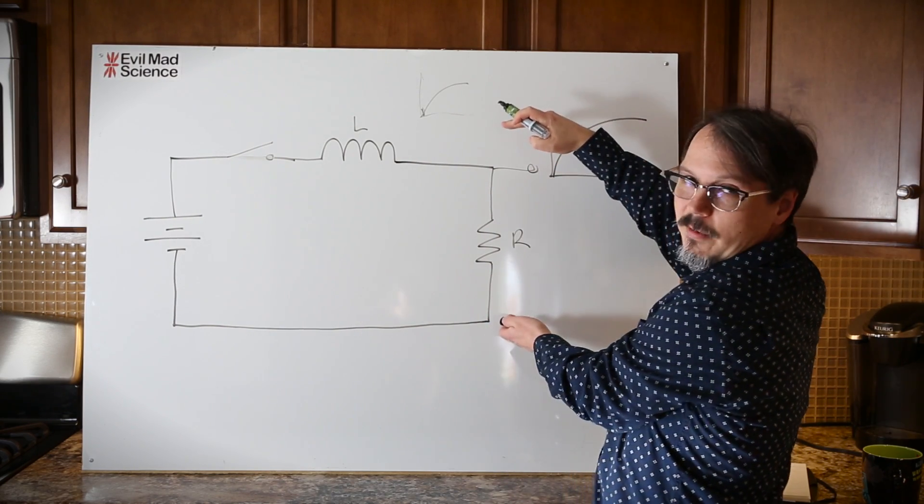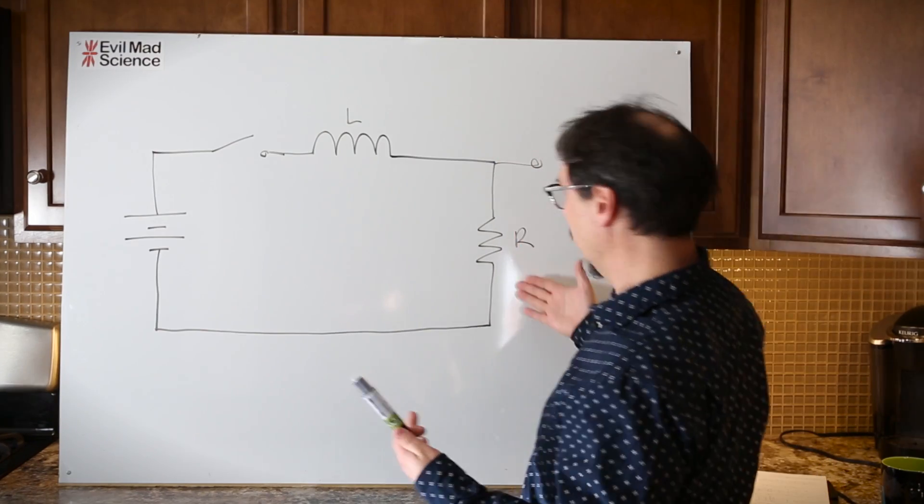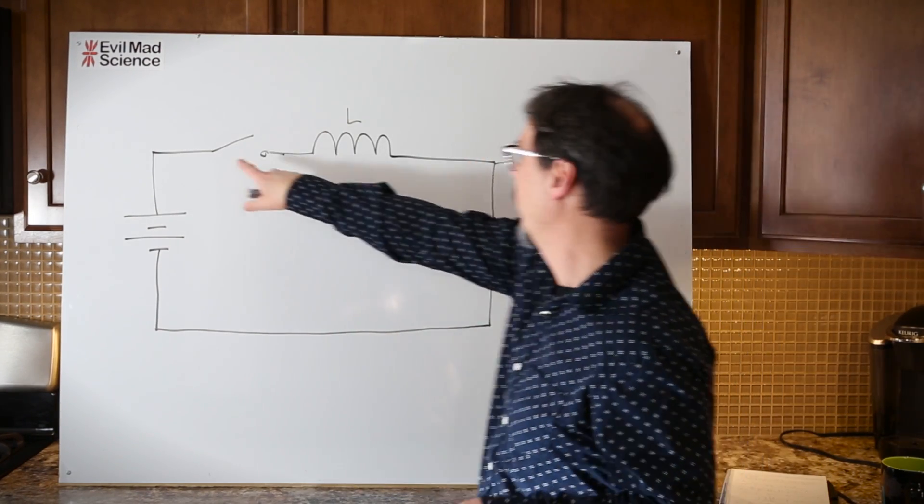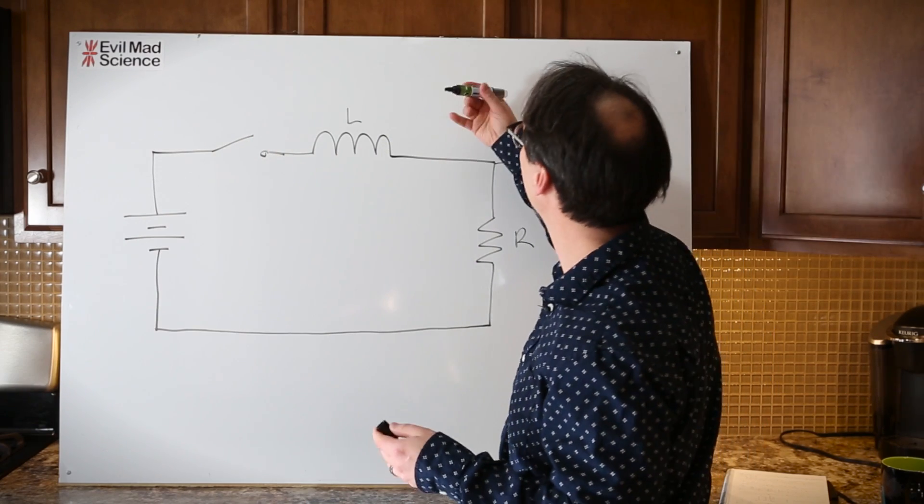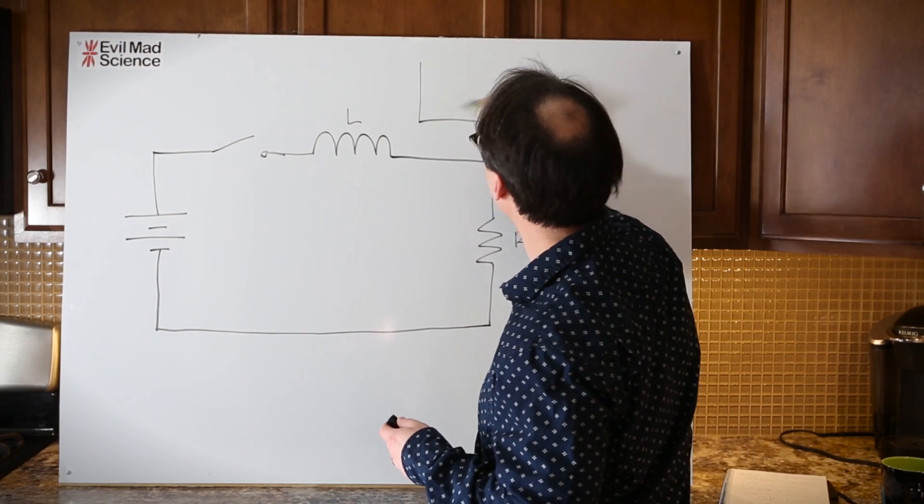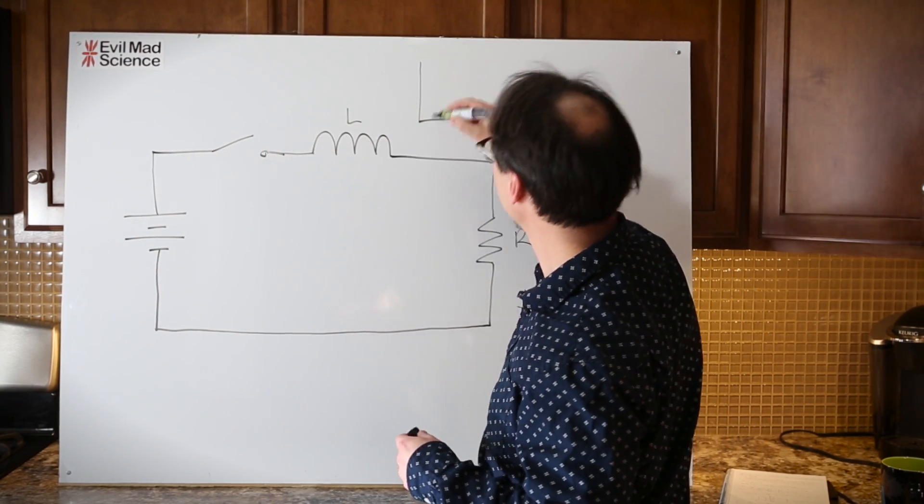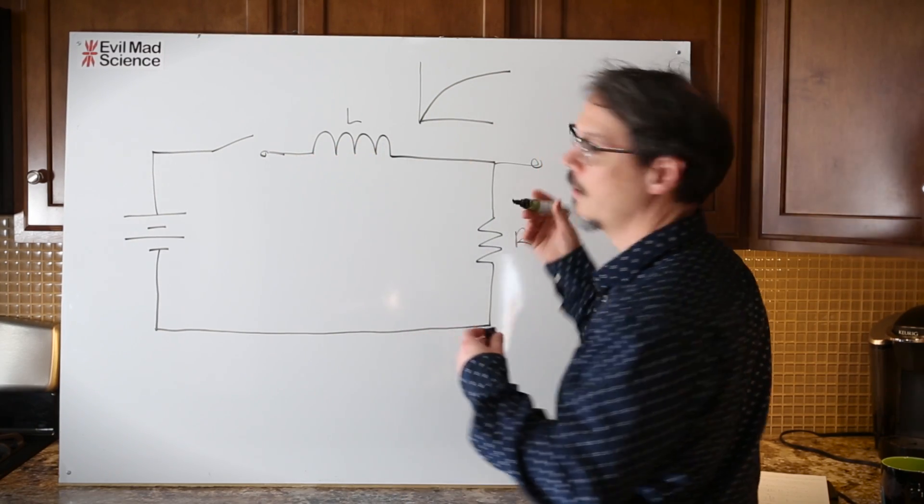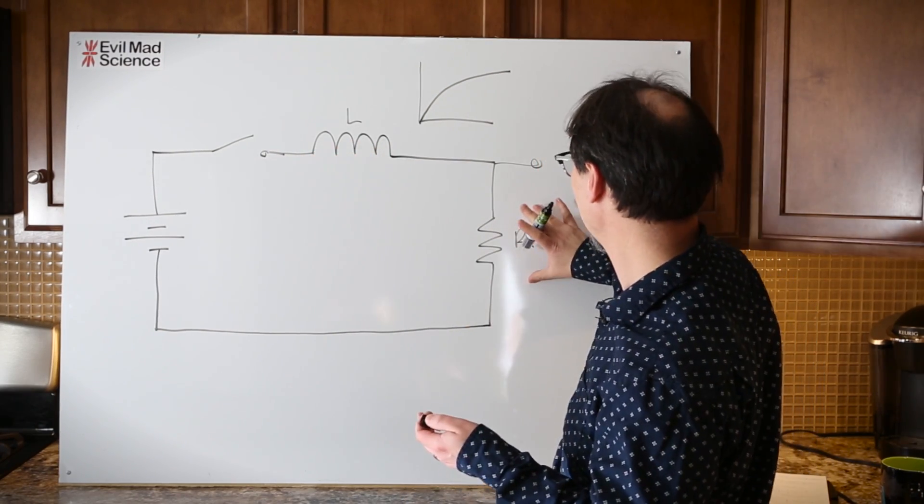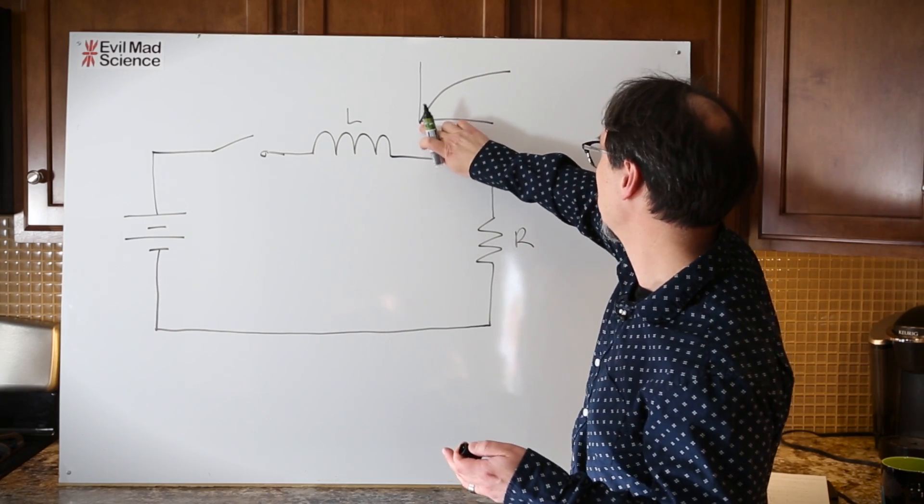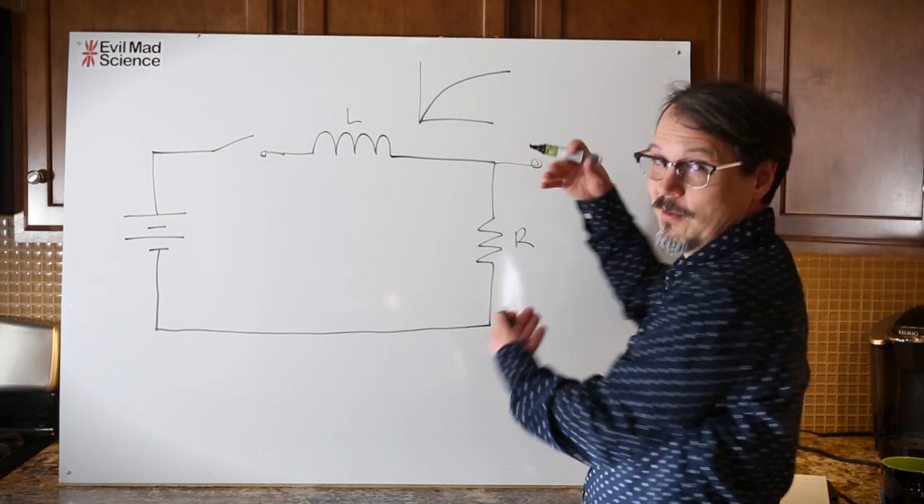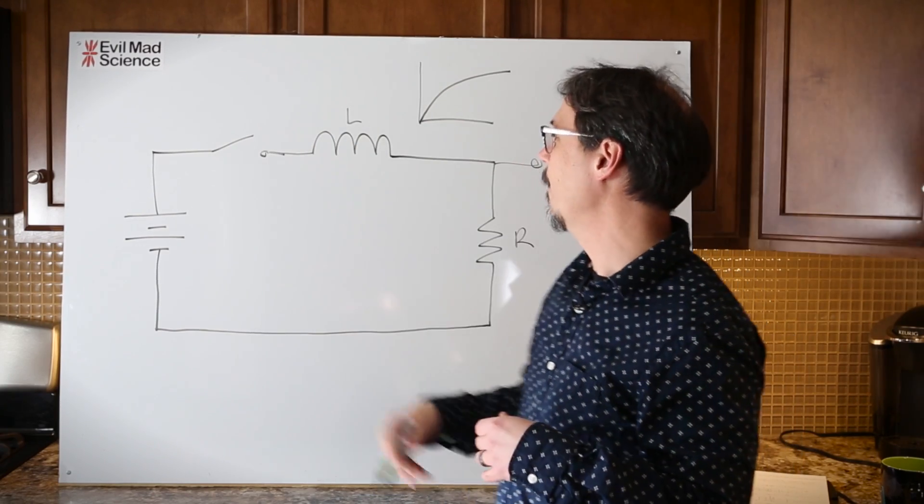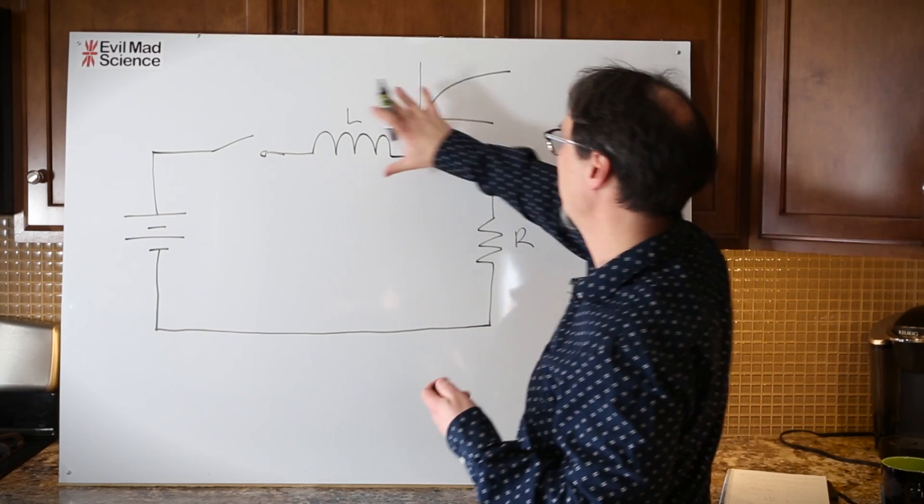I've got a load, I've got a battery. When I close this switch, as I said, current is going to rise slowly through the inductor. So what does that mean? It means across this resistor, the voltage is going to rise slowly because current is gradually increasing.